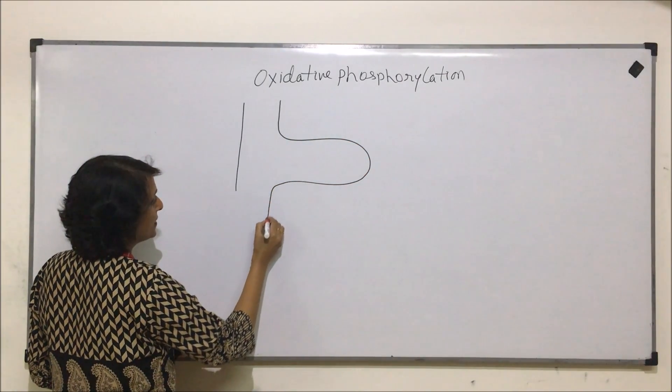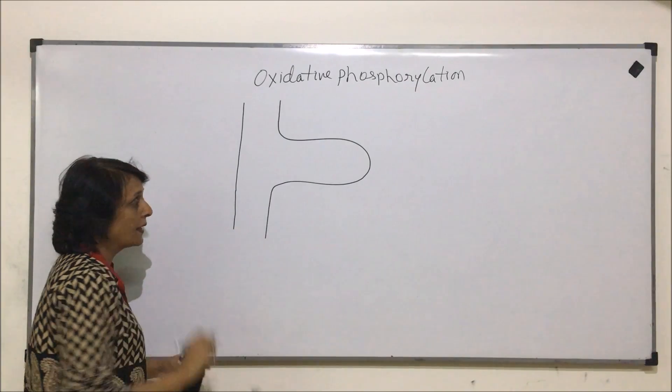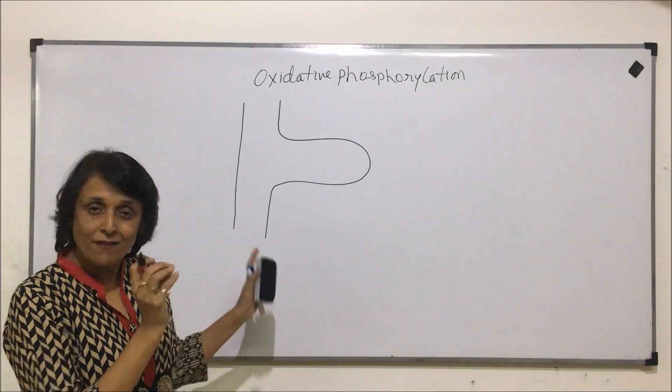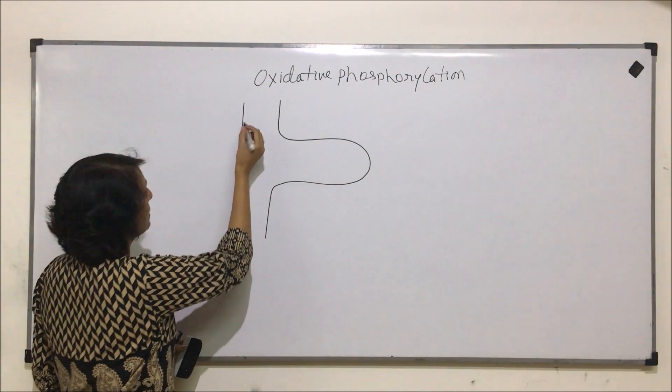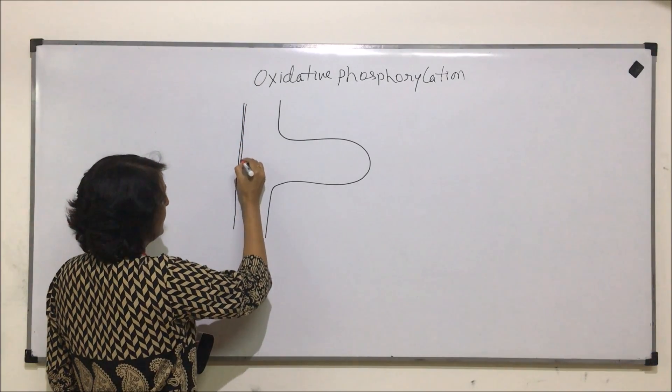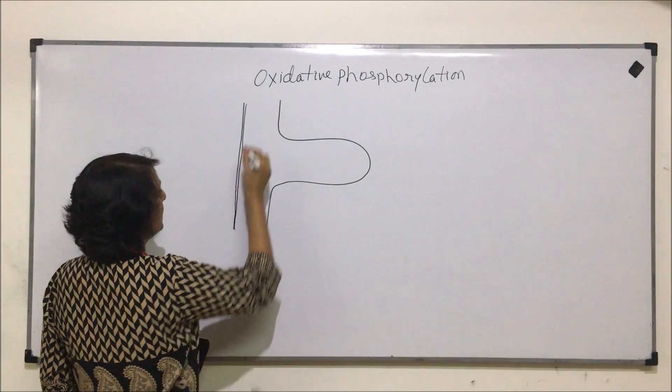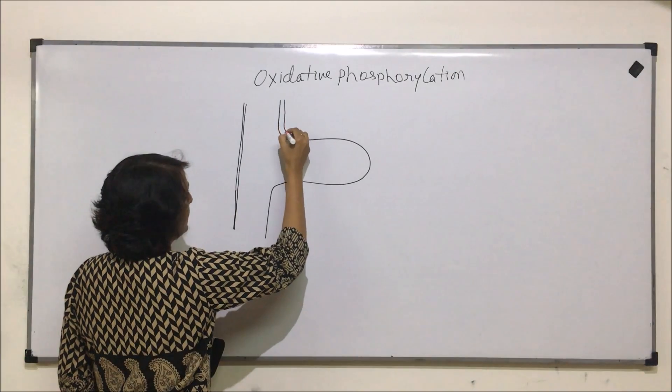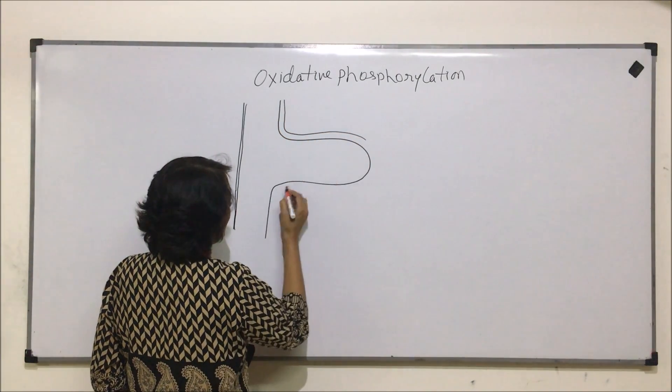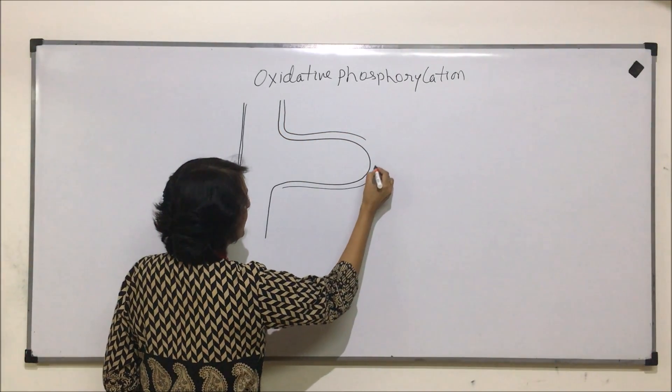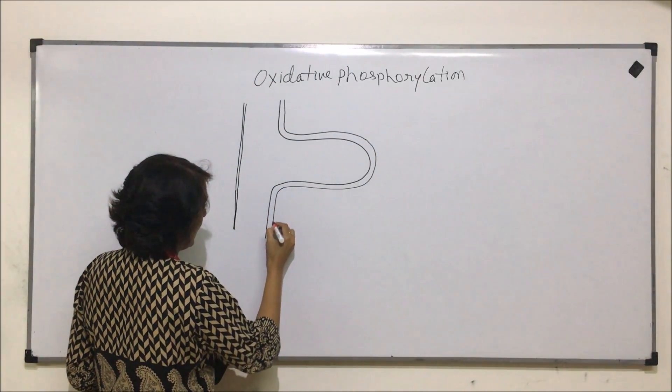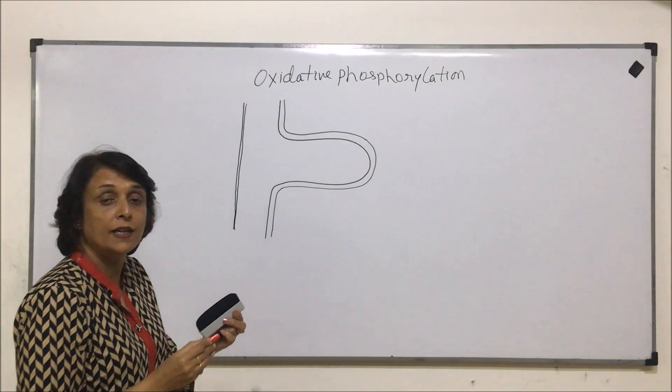Now, this is one crista which we are drawing here because we want to have a feel of the previous step also. This is the outer membrane, the inner membrane, and the fold on the inner membrane that is crista.